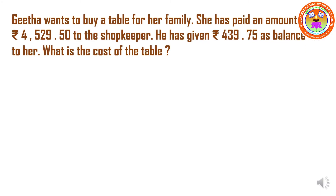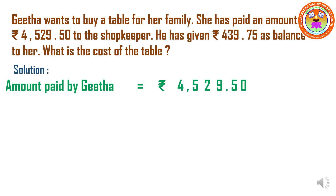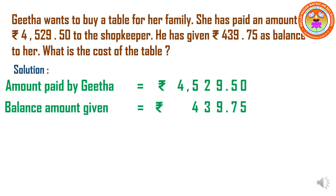Children, now let us move on to the next question. Geeta wants to buy a table for her family. She has paid an amount of Rs. 4,529 and 50 paise to the shopkeeper. He has given Rs. 439 and 75 paise as balance to her. What is the cost of the table? Amount paid by Geeta is equal to Rs. 4,529 and 50 paise. Balance amount given by the shopkeeper is equal to Rs. 439 and 75 paise. Therefore, cost of the table — for finding this we are going to subtract.